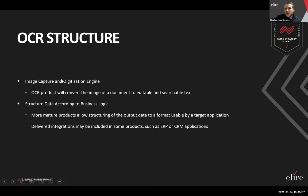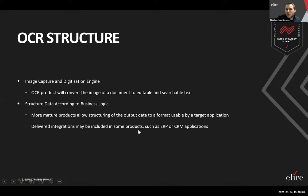In terms of OCR structure, the engine itself takes an image uploaded or captured and runs rules to digitize it — converting that image into editable and searchable text. If you have a more mature product, you can start to see tools that allow structuring the output data. A full-fledged OCR solution might include integrations — integrating contracts into your CRM application or invoices into your ERP application — but that depends on what tool you have tacked onto the back end of the OCR. The OCR is just the eyes; you need a brain to transform that data.